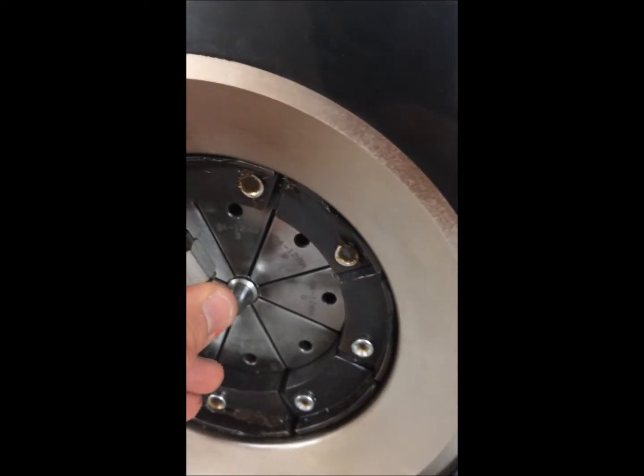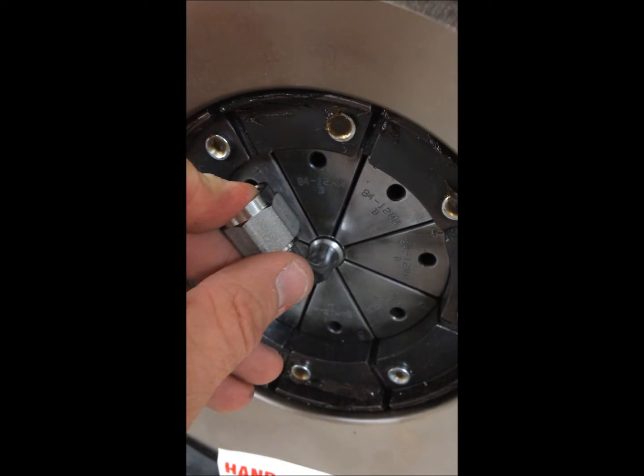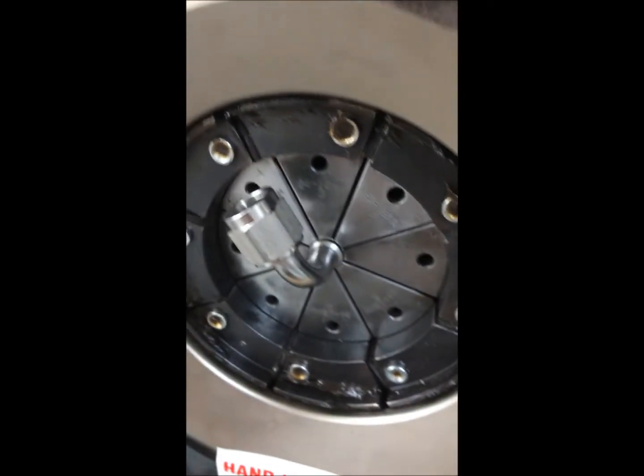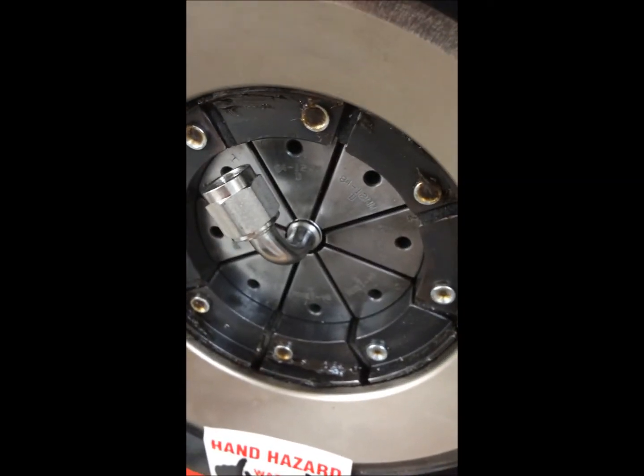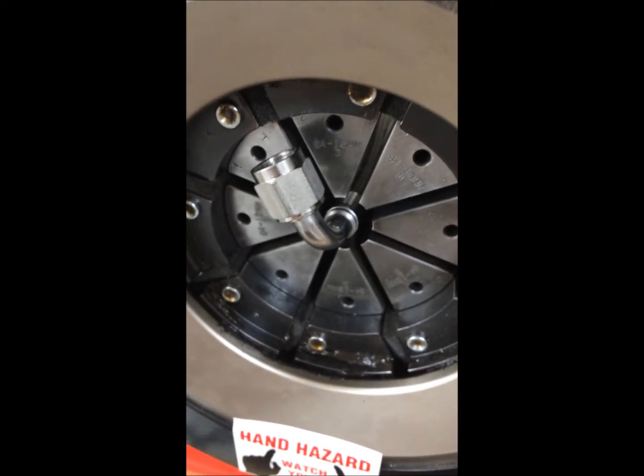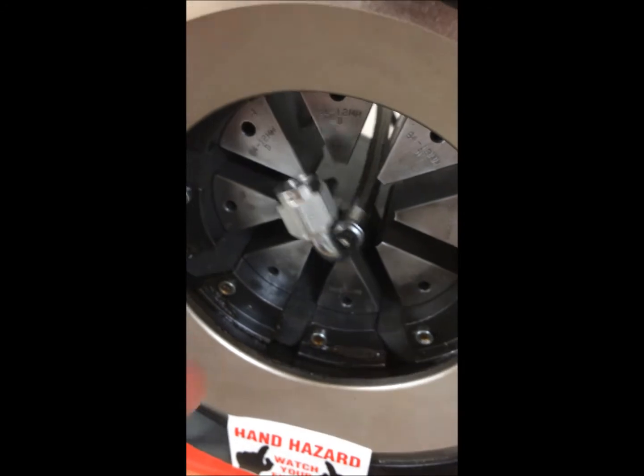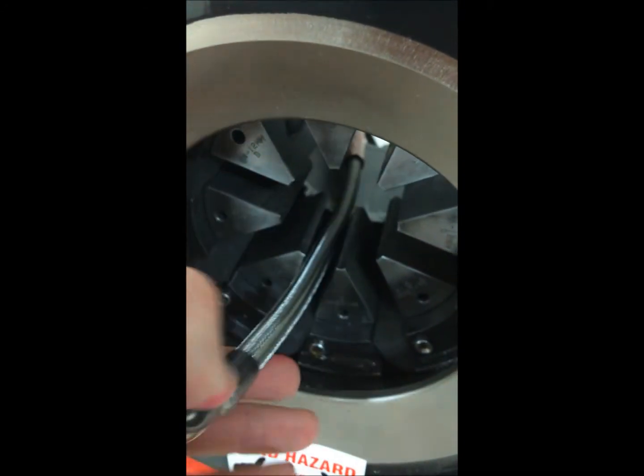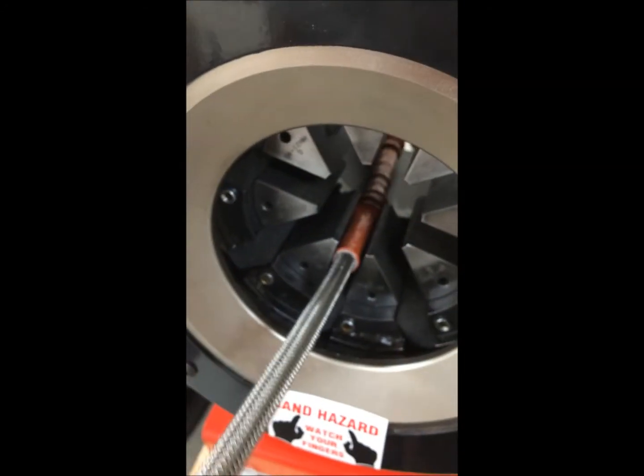The hose assembly process is the same. So here you'll see the crimping device crimp down onto the 90 degree fitting, rotate, then we crimp a second time. And when that's complete, we release the jaws and remove the hose from the machine.